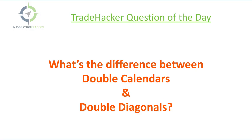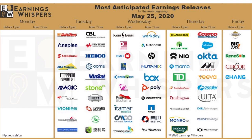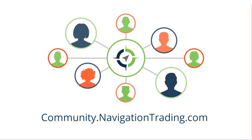One other thing I wanted to mention was earnings. Not much earnings as far as the stocks that we trade this week. Memorial Day was Monday, nothing Tuesday or Wednesday either. Really the only stock that we trade — and Costco is a good liquid big stock that we would trade — that's Thursday after the close. So not sure we'll put on a trade there, but we'll check that out Thursday before the market closes to see if we see an opportunity. If you guys have any questions, feel free to drop us a line in the community at community.navigationtrading.com. See you there.